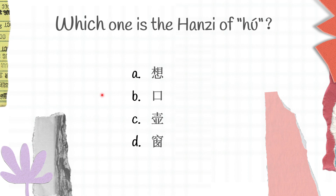Moving on to the next question: which one is the Hanzi of 'hǔ'? You can try to guess first. A is xiǎng, B is kǎo, C is hǔ, and D is chuǎng. Hǔ here is C.